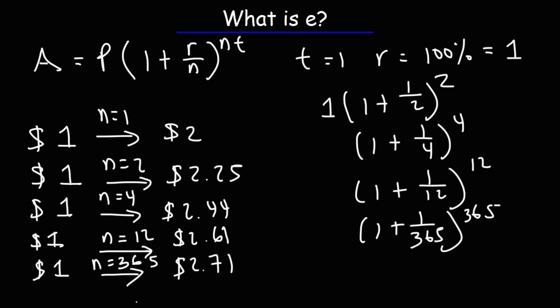Now, it turns out that as n approaches infinity, that is, if it's compounding continuously, you'll get e, which is 2.718, 2.8 and so forth. And you could test it out. If you plug in a very large number for n, you're going to get e.